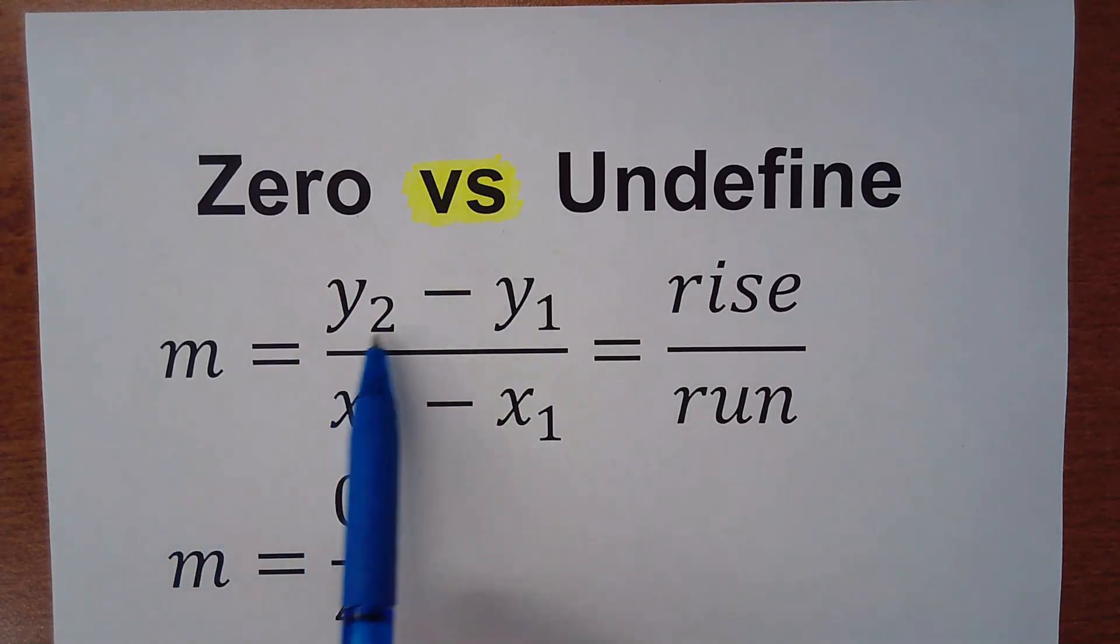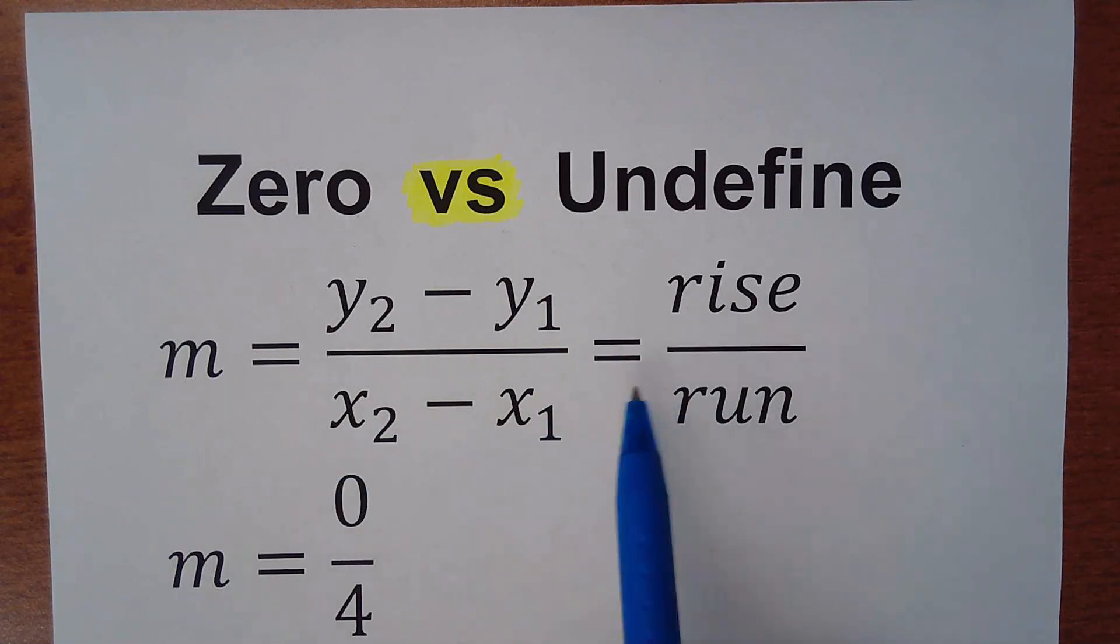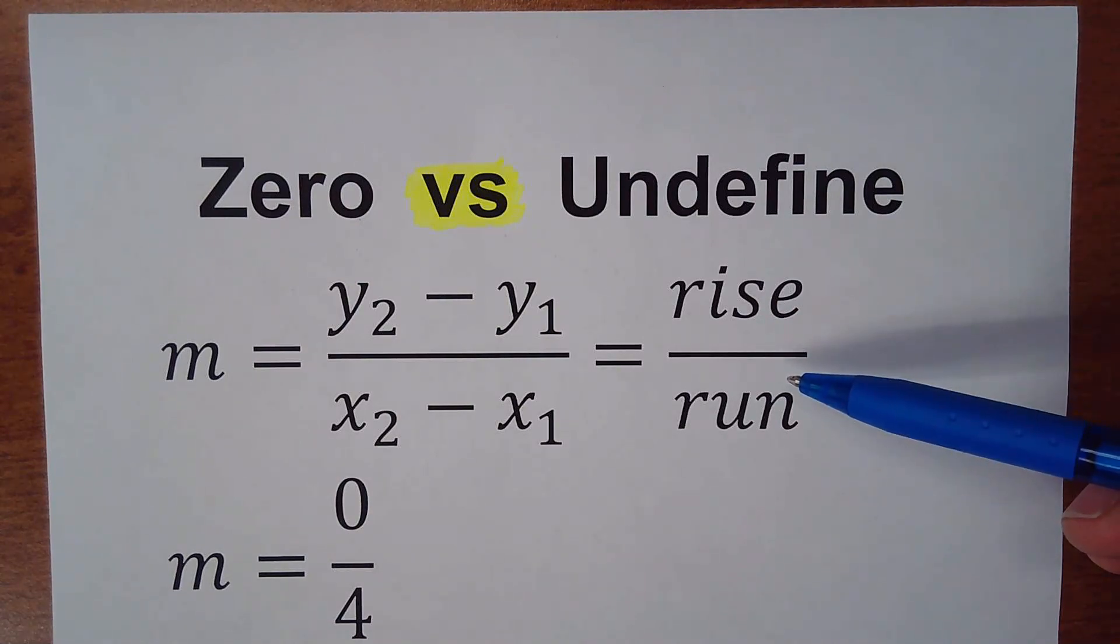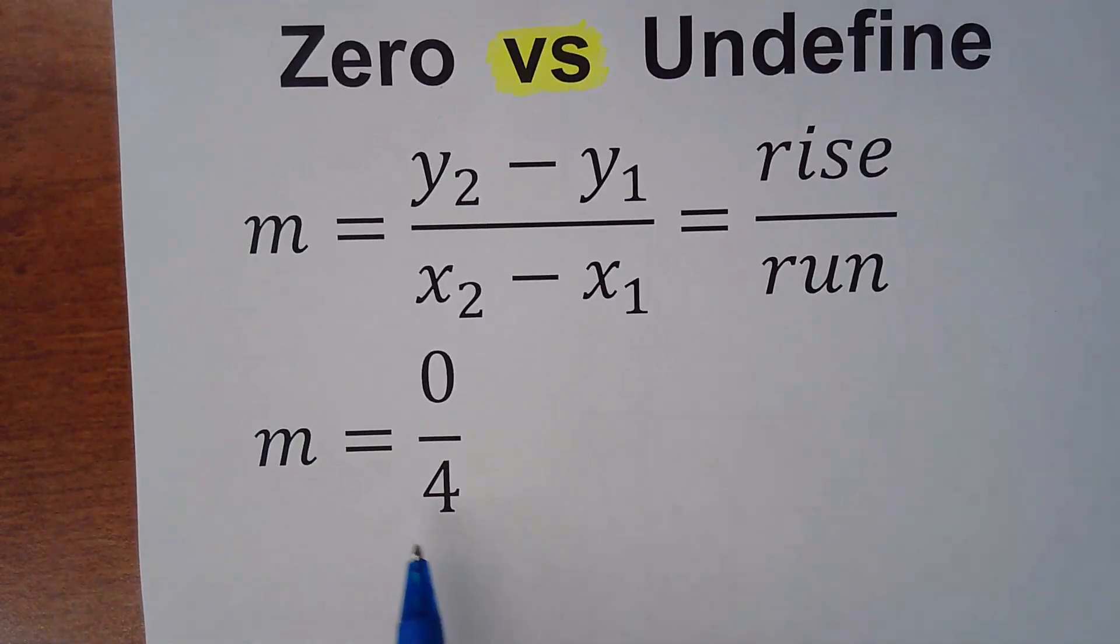That's very common in the slope formula when you have y2 minus y1 over x2 minus x1, the rise over run. So when you have rise over run, rise is the change in y and run the change in x. So let's suppose we get zero over four.